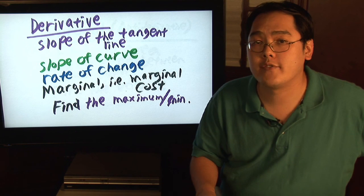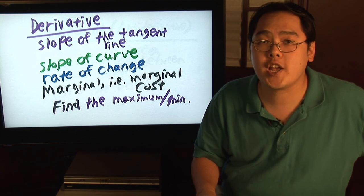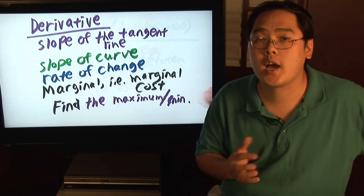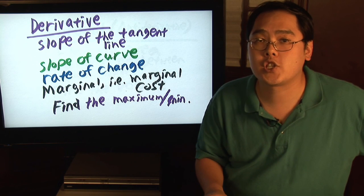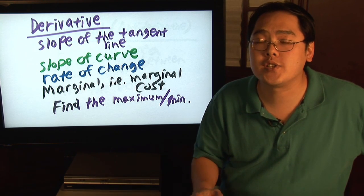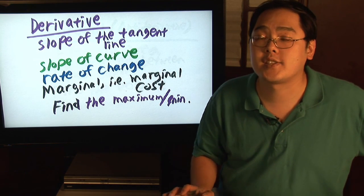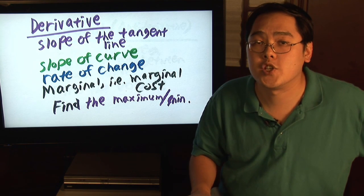But also derivative is the rate of change. If you're asked to find the rate of change or if you're given in the context of a problem that things are changing or increasing or decreasing, that's another clue to write things in derivative notation.